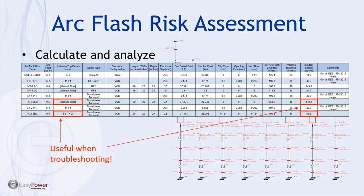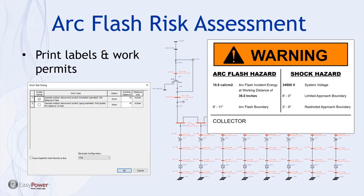As a final step, the program allows you to generate arc flash labels for each simulated enclosure with the relevant information pre-printed automatically. On a bus-by-bus basis you can also generate an energized work permit for different predefined work tasks — this dialogue generates a Word document pre-filled and formatted that can be further edited and signed off on by supervisors. The program does a lot of the legwork in putting those permits together.